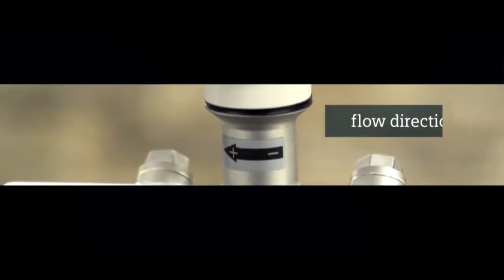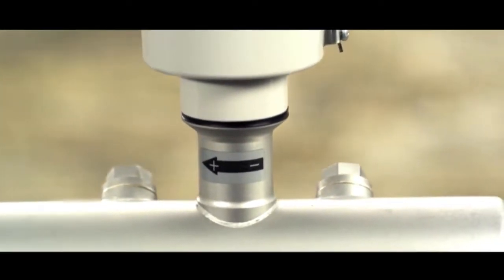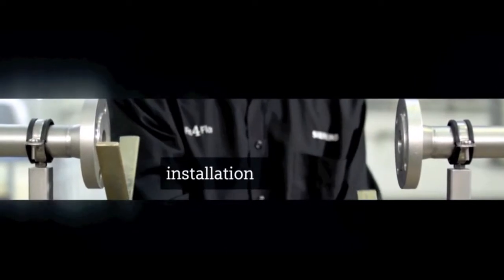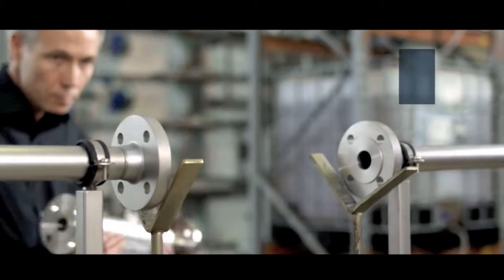Pay attention to the direction of the flow. An arrow on the sensor indicates the calibrated flow direction. To make installation easier, use a pipe support to position the Zetons FC430.